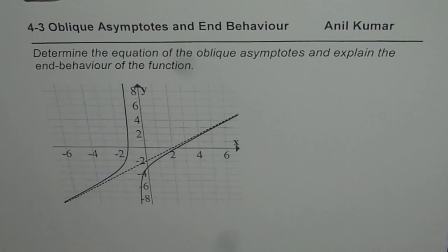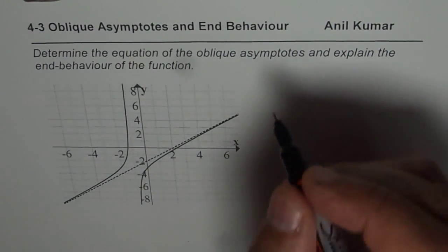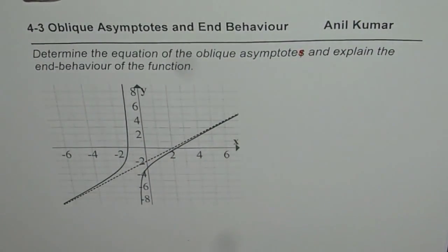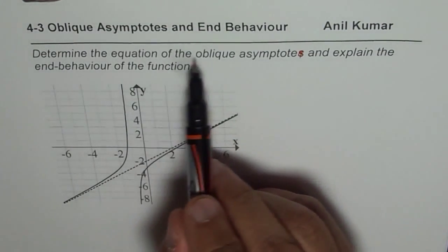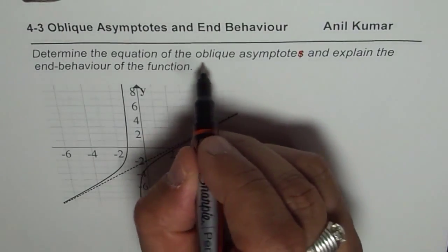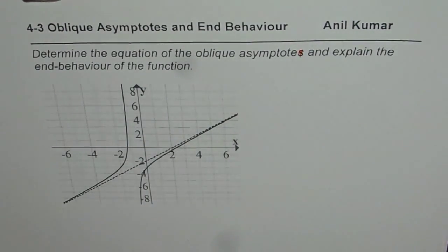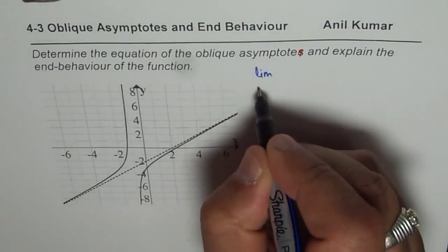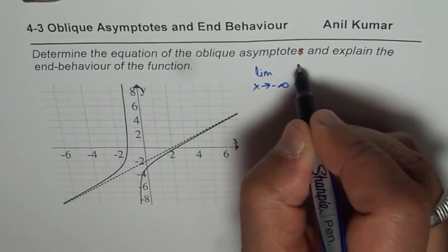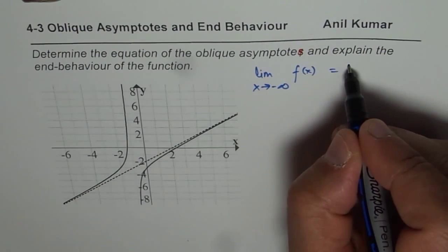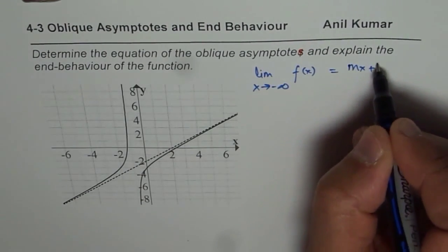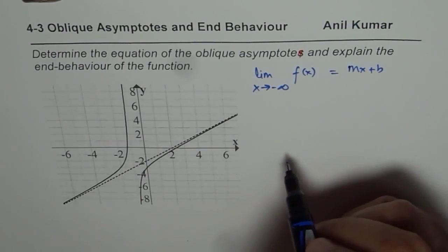The question here is: determine the equation of the oblique asymptote and explain the end behavior of the function. We will have only one oblique asymptote in most of the graphs. Oblique asymptote really means that we could find the limit of the function as x approaches negative infinity. If the function approaches a line — say y equals mx plus b, a linear function — then we say there is an oblique asymptote.